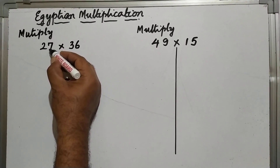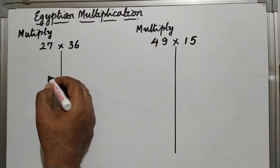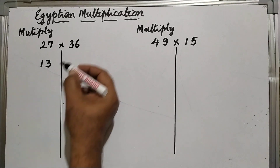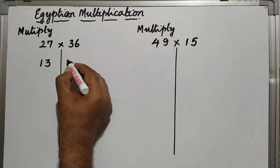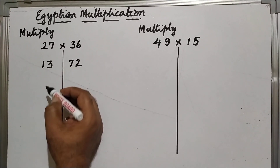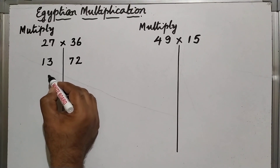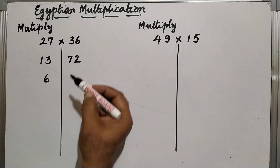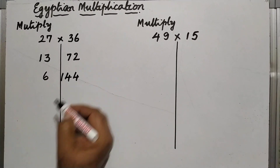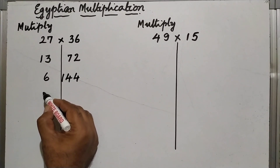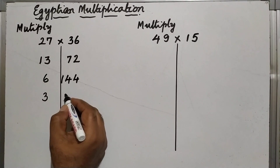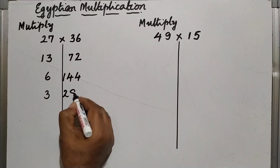When I divide 27 by 2, I get 13 and a half. I omit that half and take 13. If I double 36, I get 72. If I divide 13 by 2, I get 6 and a half. That half is omitted and I take 6. If I double 72, I get 144. Dividing 6 by 2 gives 3. Doubling 144 gives 288.